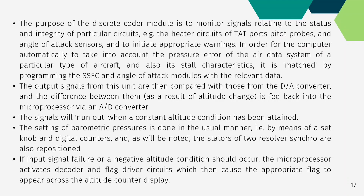The output signals from this unit are compared with those from the DA converter, and the difference resulting from altitude change is fed back into the microprocessor via an AD converter — this signal nulls out when a constant altitude condition is attained. The setting of barometric pressure is done in the usual manner via a set knob and digital counters, and the stators of two resolver synchros are also repositioned. If an input signal failure or negative altitude condition occurs, the microprocessor activates decoder and flag driver circuits, causing the appropriate flag to appear across the altitude counter display.